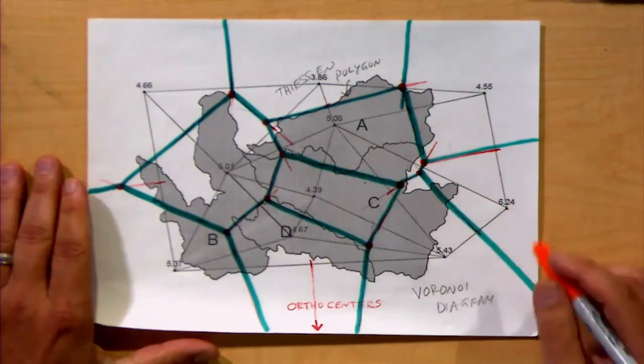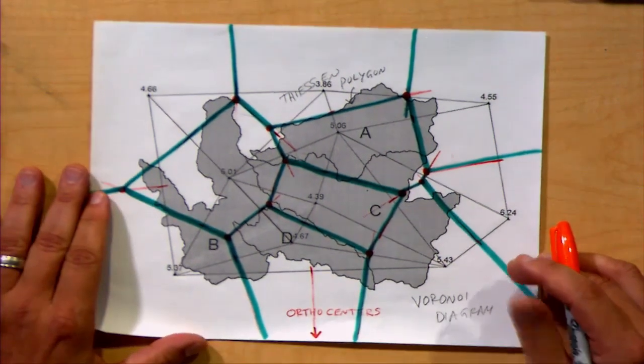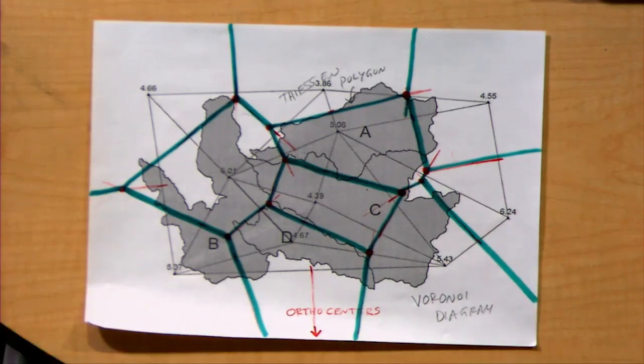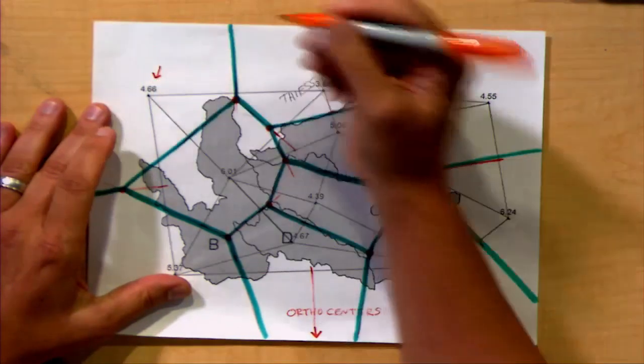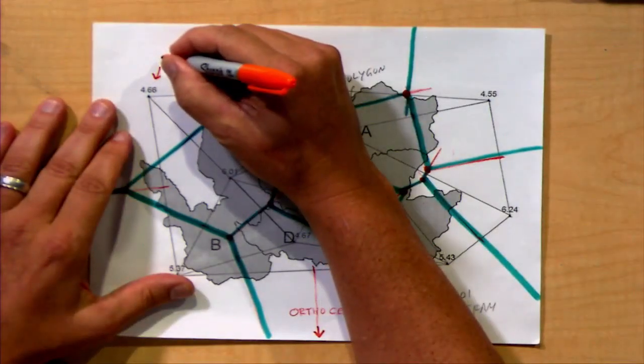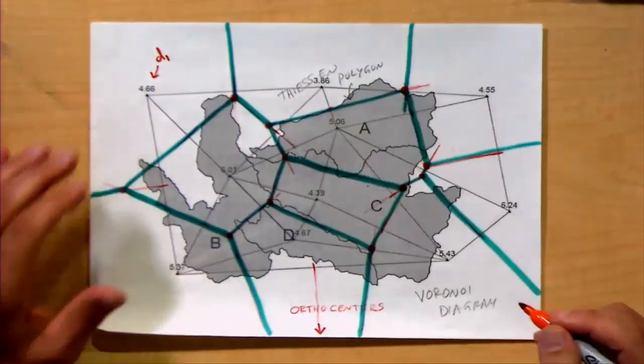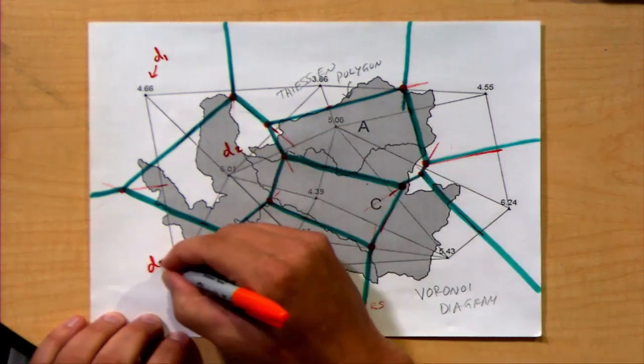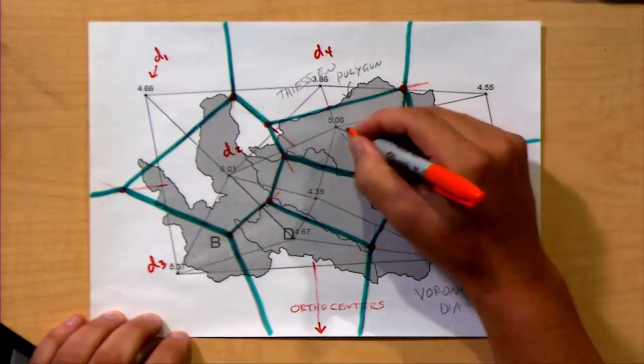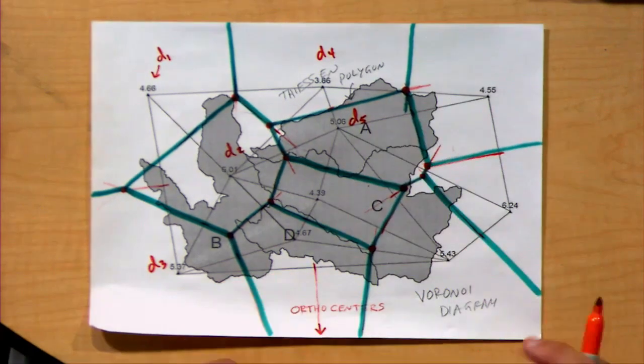So here, I have a completed region where I've divided using Thiessen polygons. And in each of these regions, we have a value. In this case, this value was a rain depth. In this case, it's a rain depth. Maybe I could label that as D1, D2, D3, and so on and so forth, where we have some number of values that we can index.